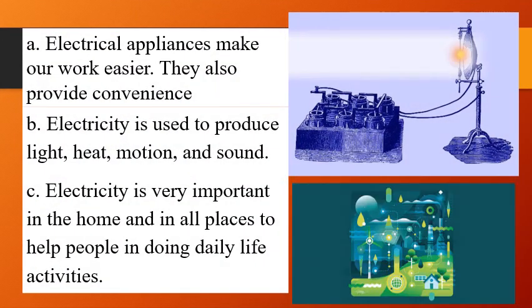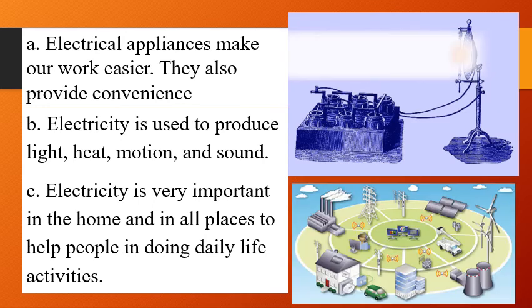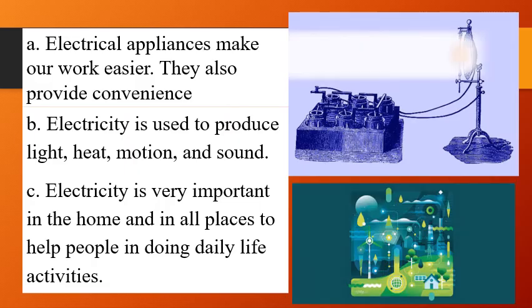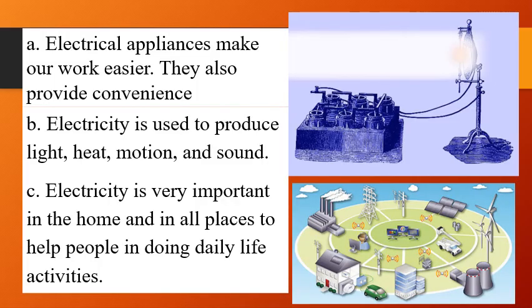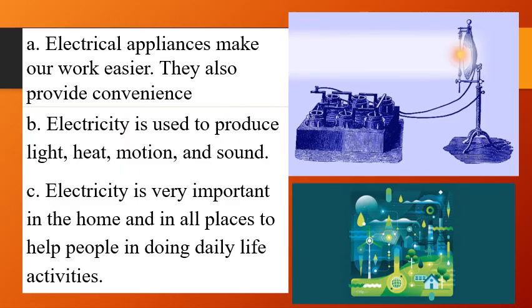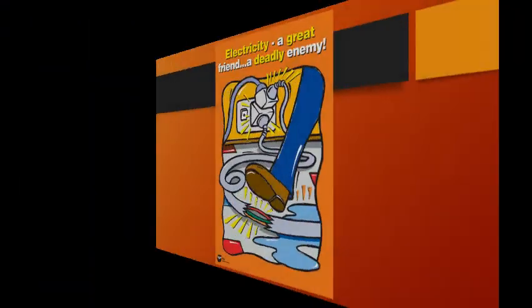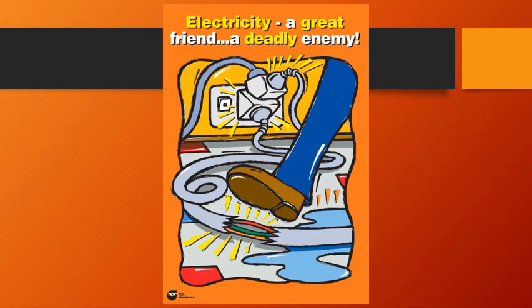We also discussed that electrical appliances make our work easier. They provide convenience. Electricity is used to produce light, heat, motion, and sound. It is important in our homes and in all places to help people in doing daily life activities. Electricity is one of the most exciting forms of energy. It is amazingly useful but it can also be incredibly dangerous. It is important to protect yourself from electrical hazards.